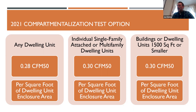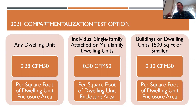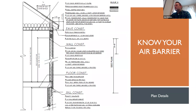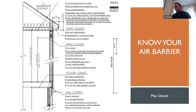This is just another option. If you don't want to do the 3 ACH or 5 ACH-50 test, you can do 0.28 CFM-50 for any dwelling, or 0.3 for attached dwellings, multifamily, and small units. Something to know whether you're doing CFM-50 or ACH-50 is you need to know your air barrier if you're going to pass regardless of the target. If you can't show where your air barrier is on the building plans, you don't know where it is, and you're not going to pass your blower door test except possibly by luck.